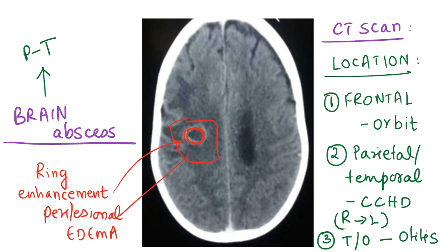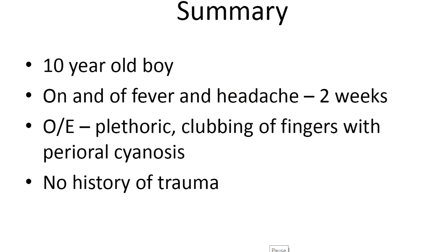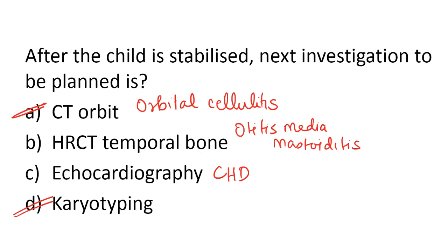So we can rule out CT orbit, because if it were orbital cellulitis the frontal lobe would be involved, but here the abscess is in the temporoparietal area. It can be HRCT temporal bone or echocardiography. Going back to the clinical summary: the child has cyanosis, which is a clue to cyanotic congenital heart disease. Long-standing cyanotic congenital heart disease is also associated with clubbing, and the plethoric appearance is due to associated polycythemia. So the diagnosis is cyanotic congenital heart disease, and we can rule out HRCT.